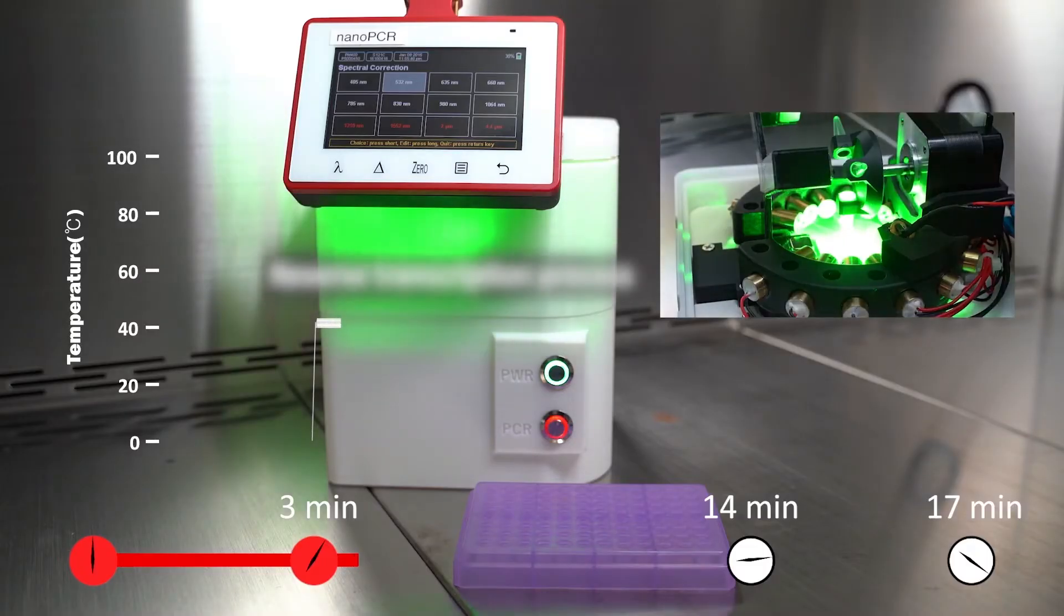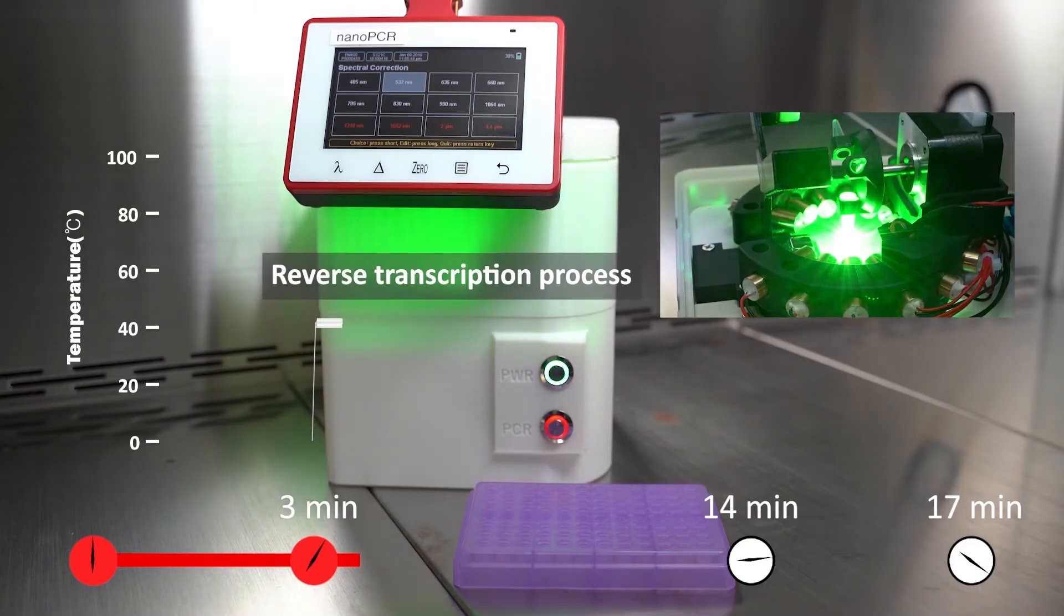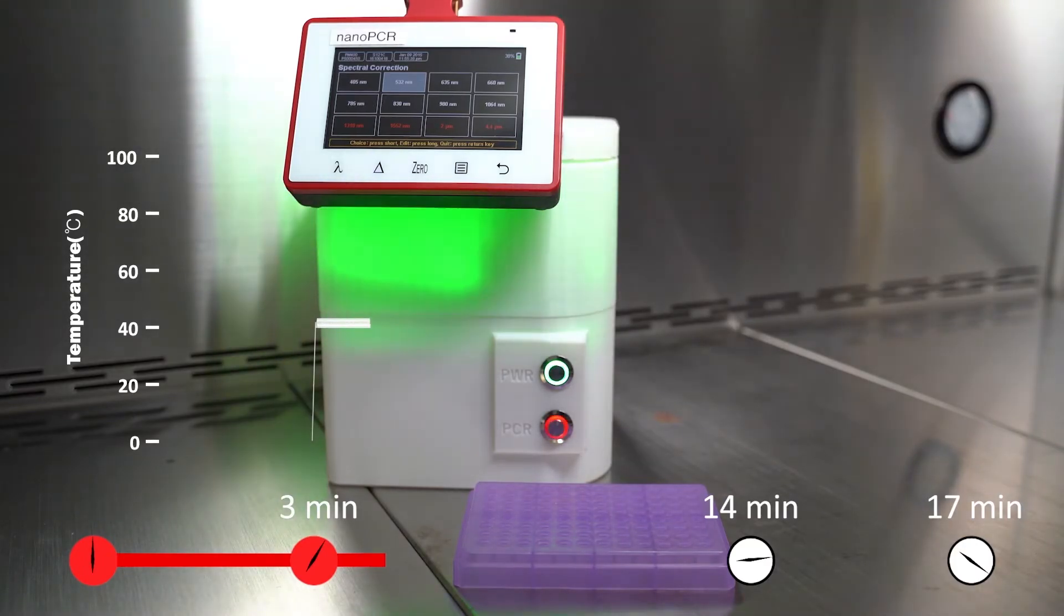In nano-PCR, each cycle takes only 9 seconds in comparison to conventional RT-PCR, which takes around 2 to 3 minutes. This means that 40 PCR cycles take only 6 minutes in nano-PCR and up to 2 hours in conventional RT-PCR.